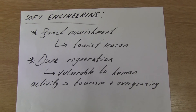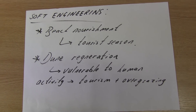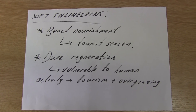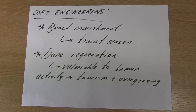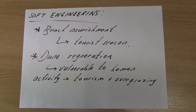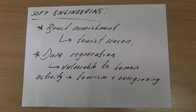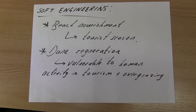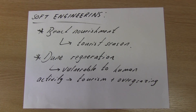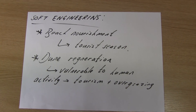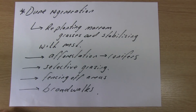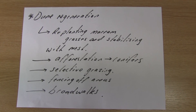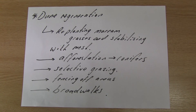Next up is soft engineering. The first strategy is beach nourishment — adding large amounts of sediment onto a beach to increase its size. This reduces the power of waves through friction and is also good for tourism, so it's often done at the beginning and end of the tourist season. We also have re-dune generation. Sand dunes are unstable — tourists climb on them and animals overgraze the vegetation, causing them to crumble and wear away. One strategy is to replant vegetation such as marram grass, which stabilizes the dune with its root system.